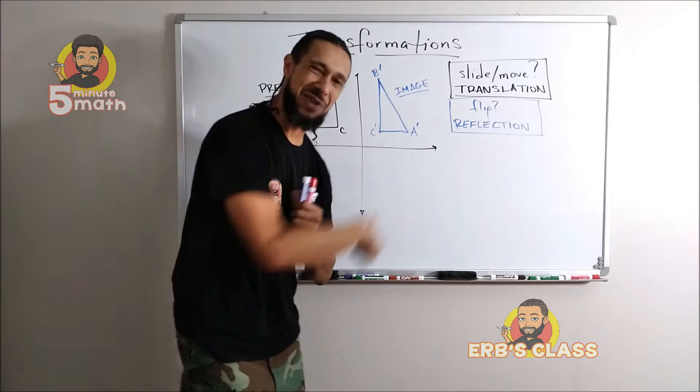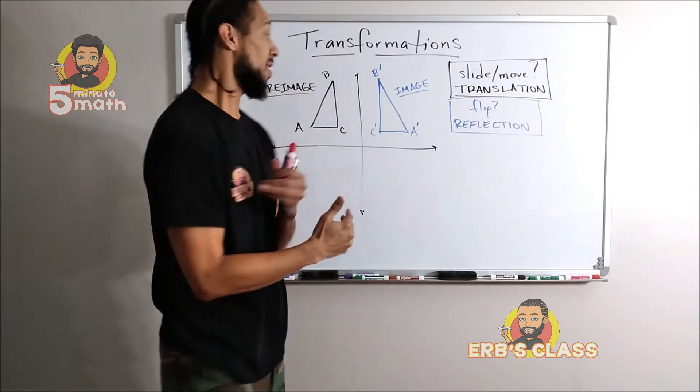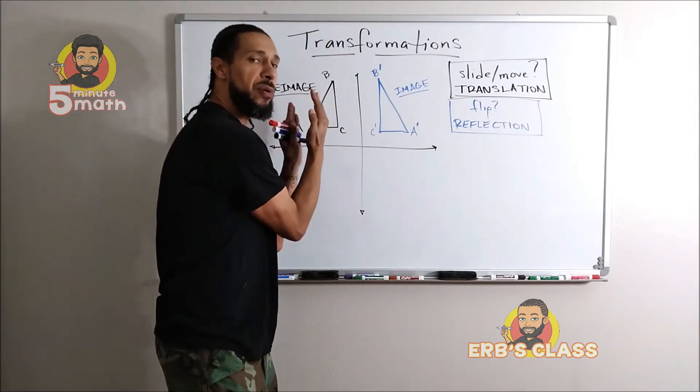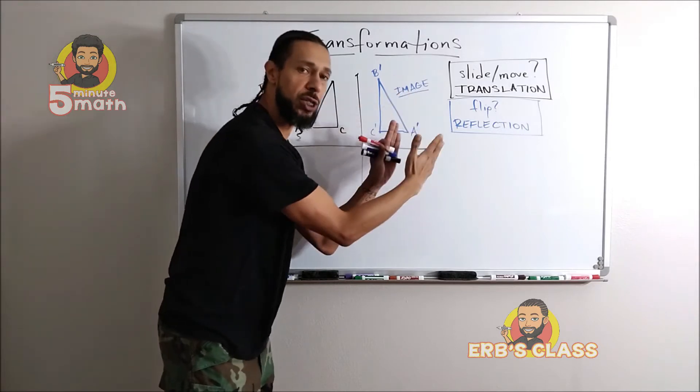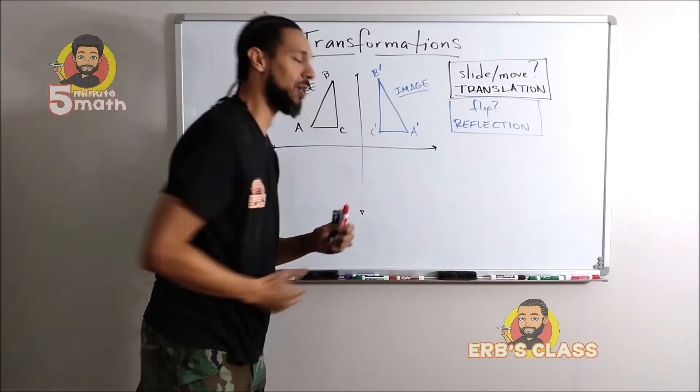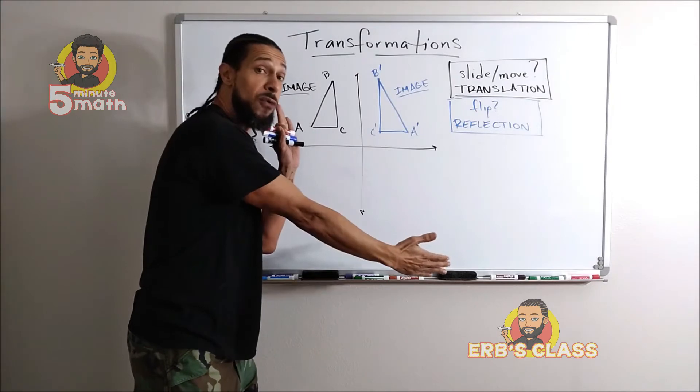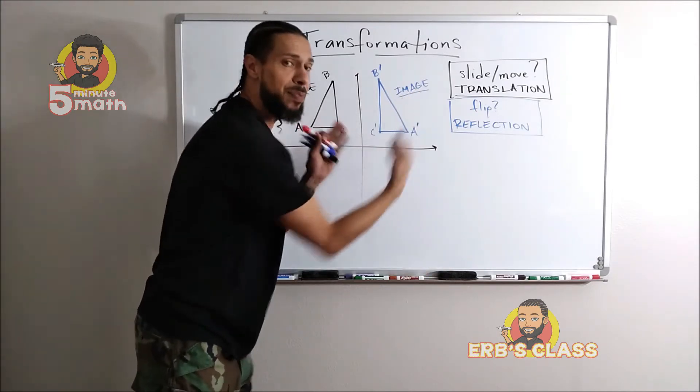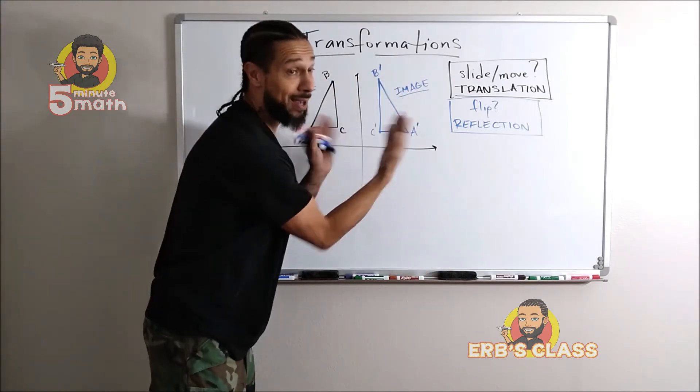So when we flip a shape, that's another type of transformation called reflection, exactly right. The before picture is still called the pre-image, the after picture is still called the image, still has prime on the after picture, but instead of just sliding and moving, it flips, reflects.